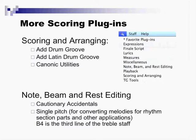Cautionary Accidentals is one of the things I do at the end of every scoring project. I run Cautionary Accidentals, which automatically looks at your score and sees if there was an accidental a bar before the next bar, and puts a parenthesis around it. Another one I've been using a lot is Single Pitch. For example, let's say you have a melody and you want to create a rhythmic part for percussion, or for kids reading note rhythms. It's a great way of converting to a single pitch.